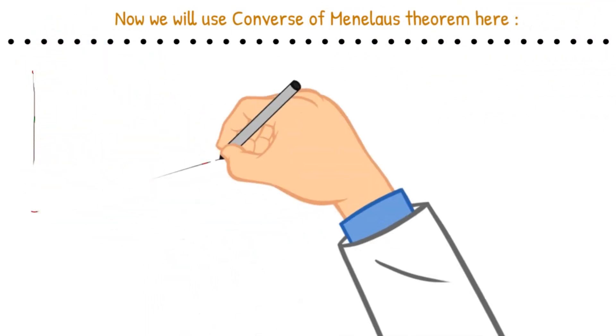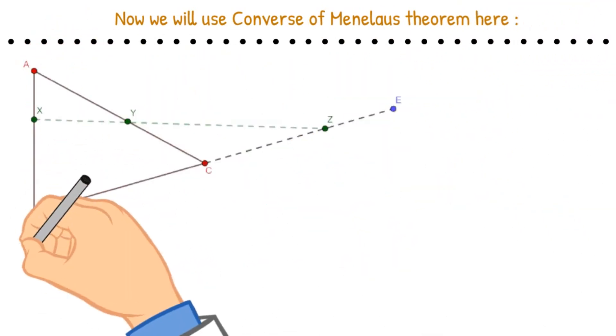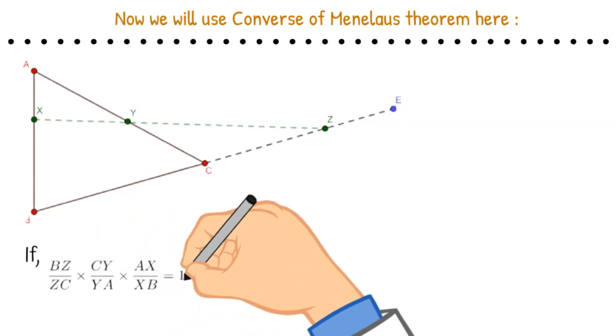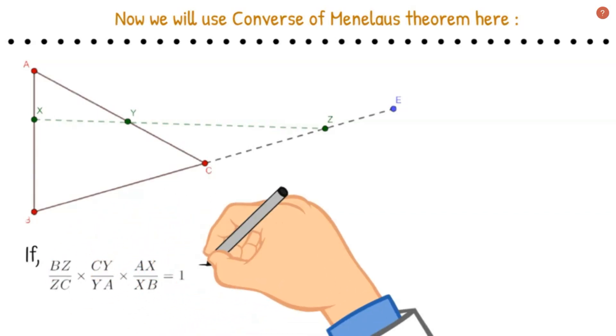Now we have to use the converse of Menelaus theorem. What is converse of Menelaus theorem? If we have a structure like this, then if BZ by ZC times CY by YA times AX by XB is equal to 1, then these three points X, Y, and Z are collinear.